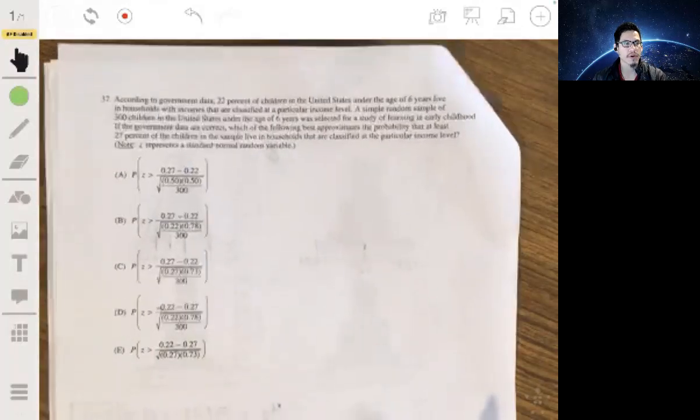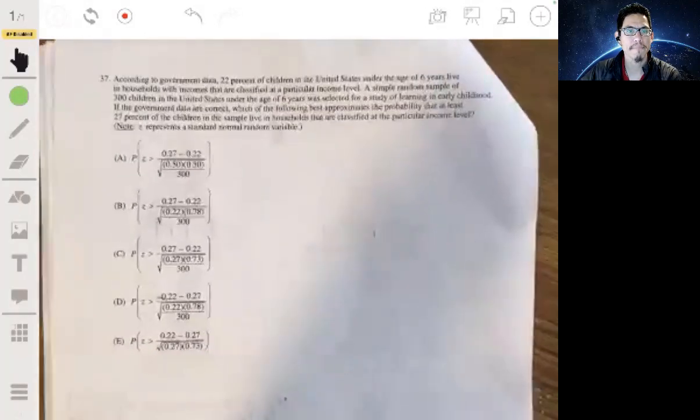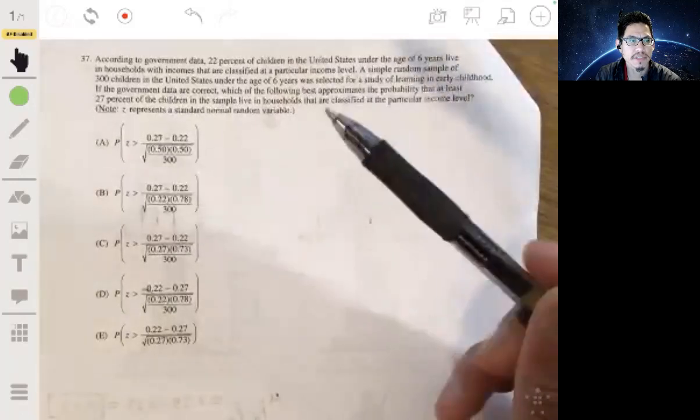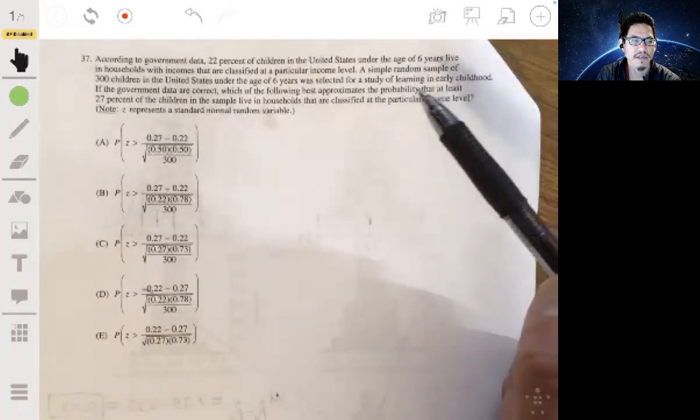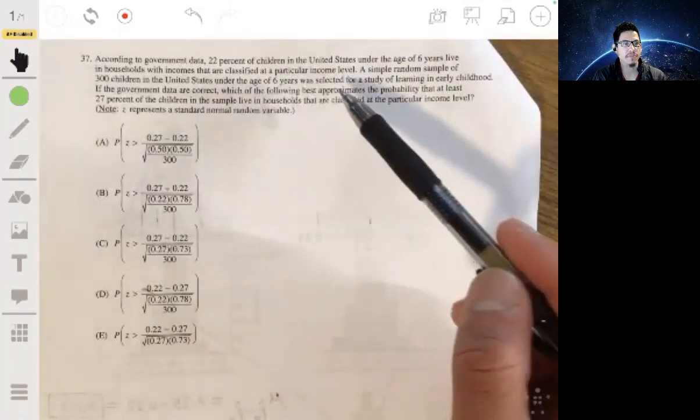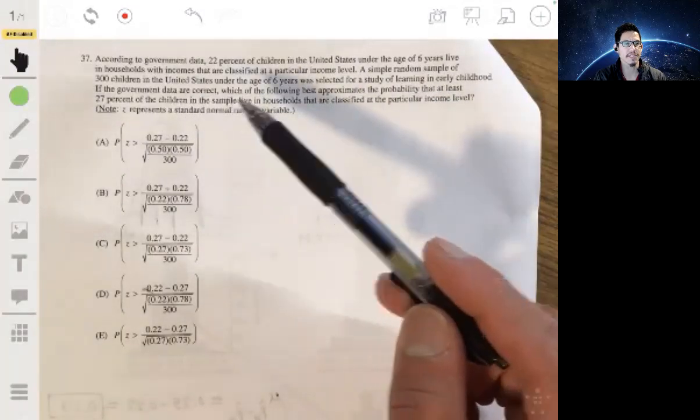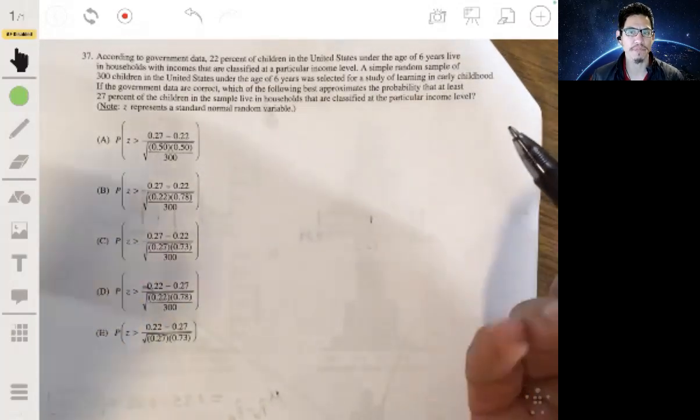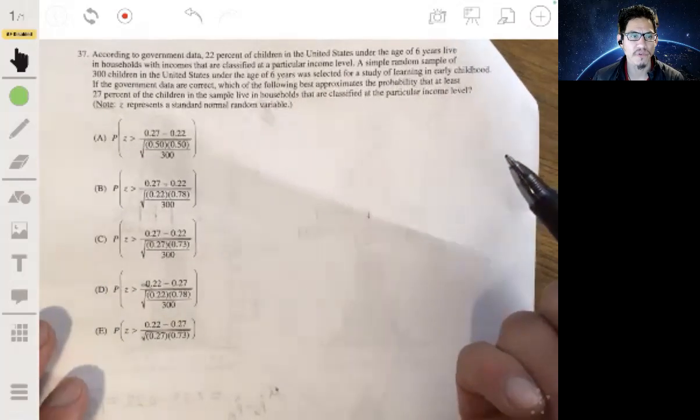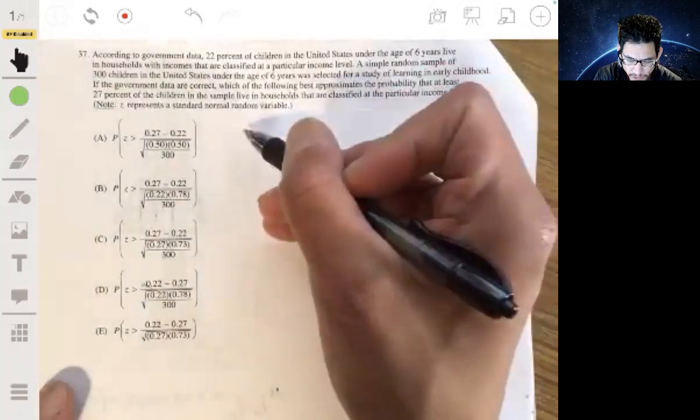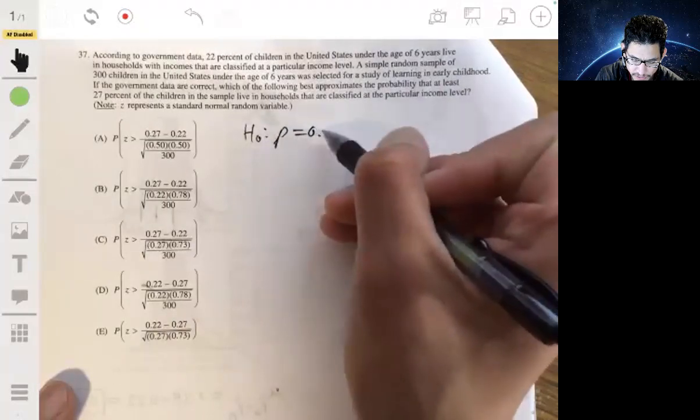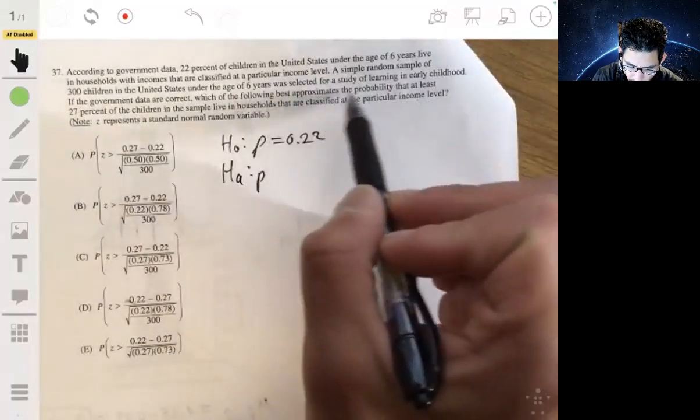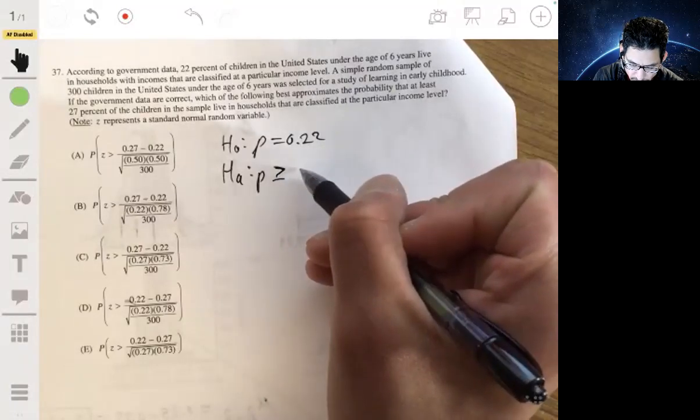All right, 37. According to government data, 22% of children in the U.S. under the age of 6 live in households with incomes that are classified at a particular income level. A simple random sample of 300 children in the U.S. under the age of 6 years was selected for a study of learning in early childhood. If the government data are correct, which is the following best approximates the probability that at least 27% of the children in the sample live in households. So essentially what you would want to do is conduct a significance test for difference in proportions.